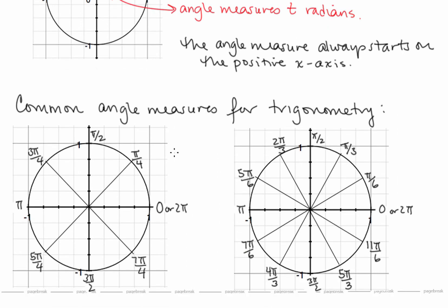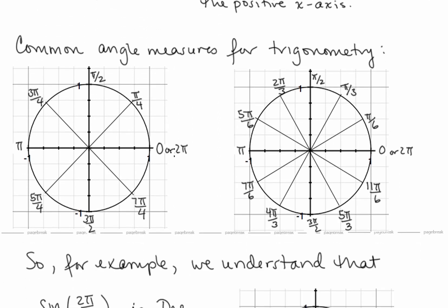Let's look at some common angle measures. When we use π/4, we take the top π and divide it into four parts: 1·π/4, then 2π/4 which reduces to π/2, then 3π/4, then 4π/4 which reduces to π, 5π/4, 6π/4 which reduces to 3π/2, 7π/4, and 8π/4 which reduces to 2π.